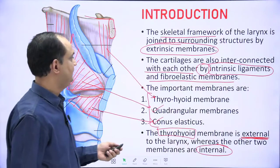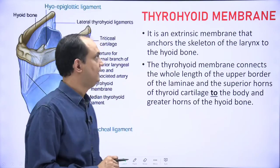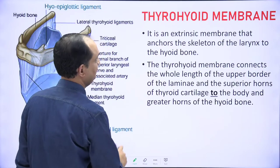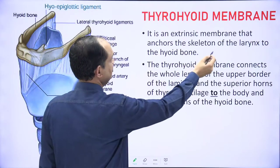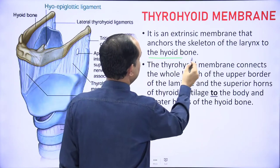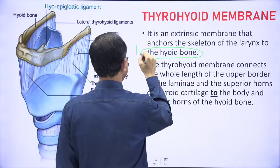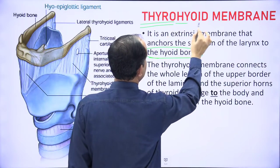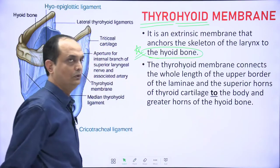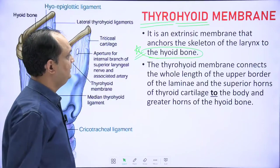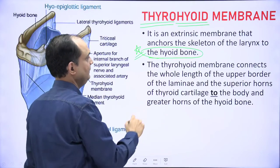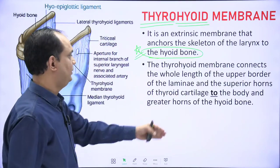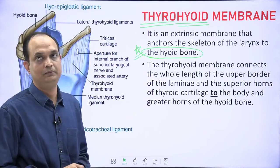The thyrohyoid membrane is an extrinsic membrane that anchors the skeleton of the larynx to the hyoid bone. As the name itself suggests, it is a connection between the thyroid cartilage and the hyoid bone. The thyrohyoid membrane connects the whole length of the upper border of the lamina and superior horn of the thyroid cartilage to the body and greater horn of the hyoid bone.